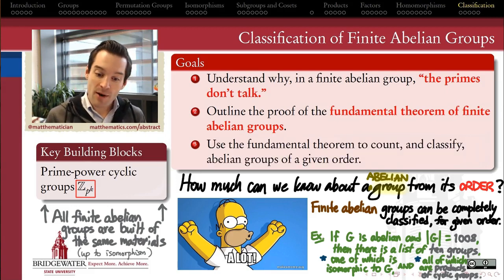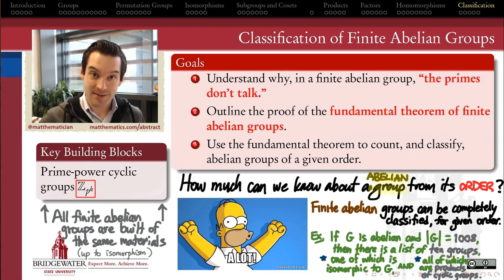And then finally, we want to see what the fundamental theorem of finite abelian groups can actually do for us. How do we classify all of the finite abelian groups of a given order? And furthermore, what else can we learn from the really powerful universal result that the fundamental theorem gives us? So that's a pretty ambitious agenda, but it's a great way to finish out the semester. Let's get going.